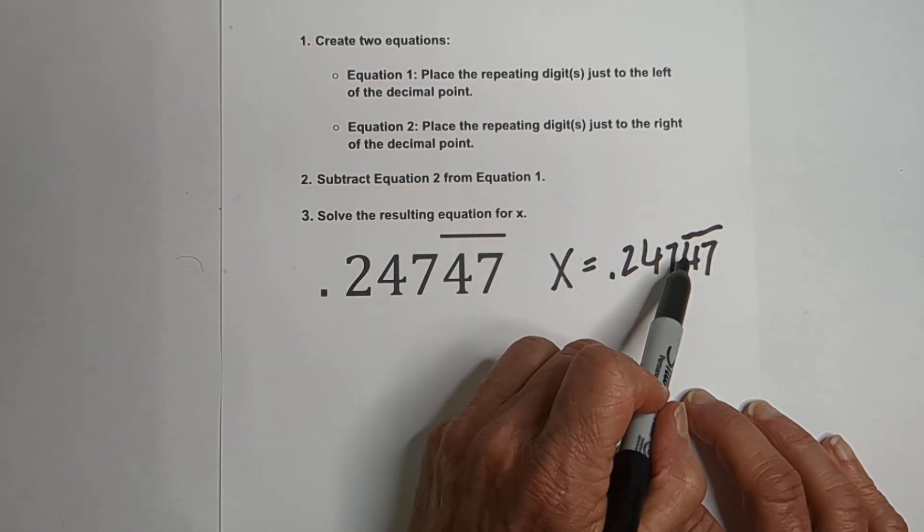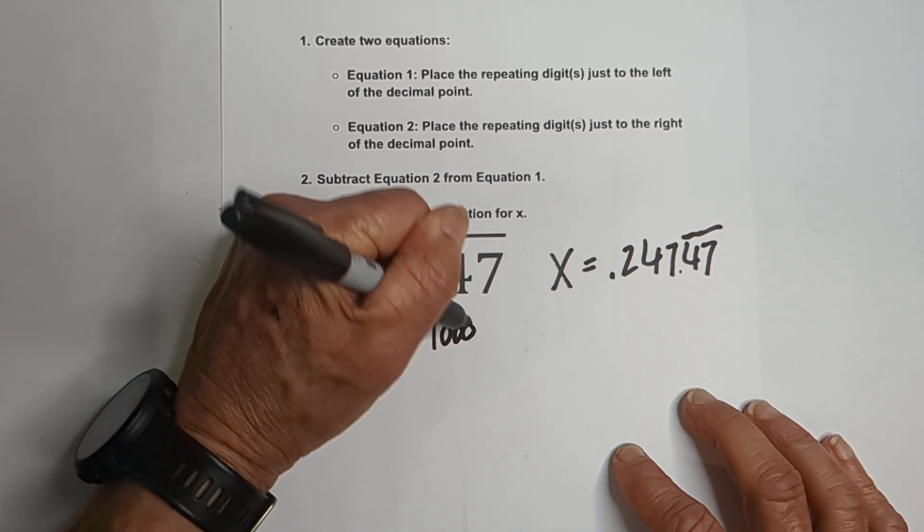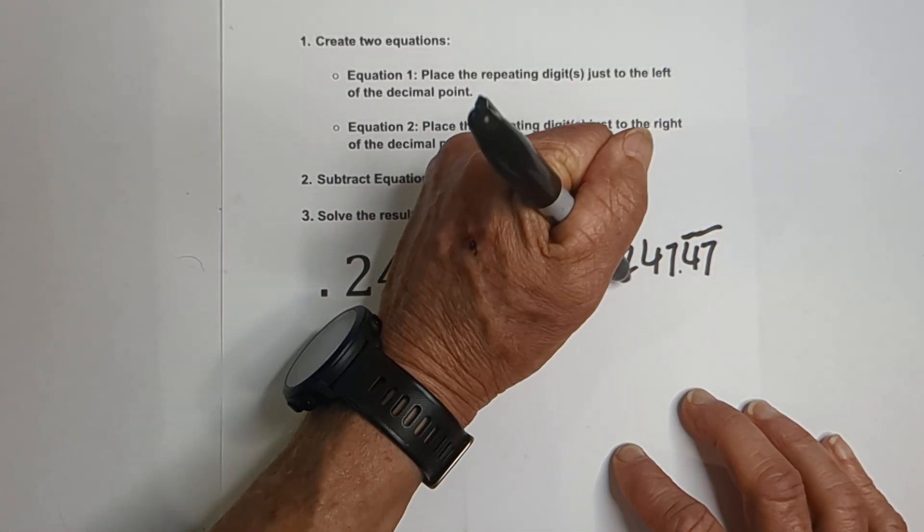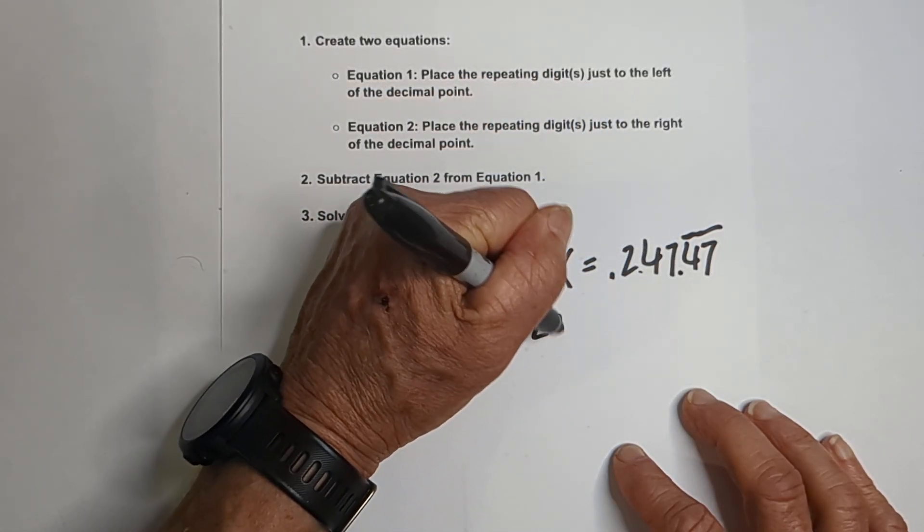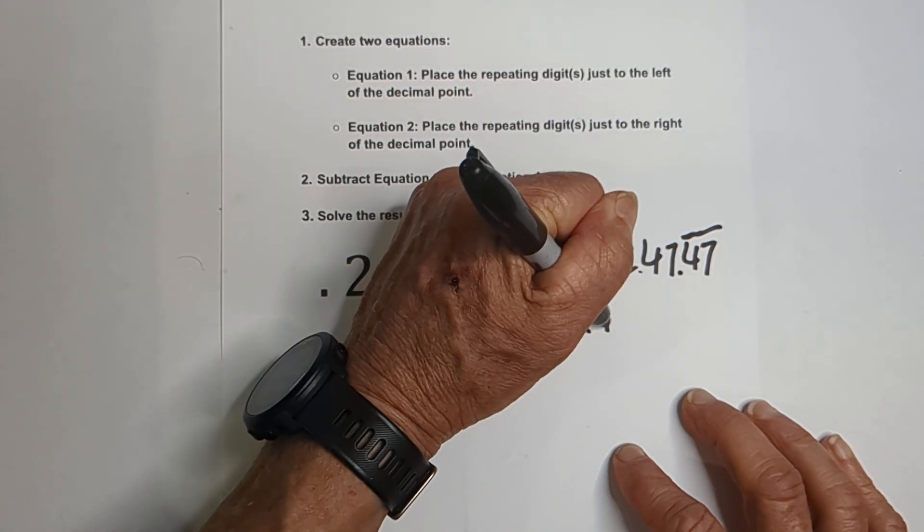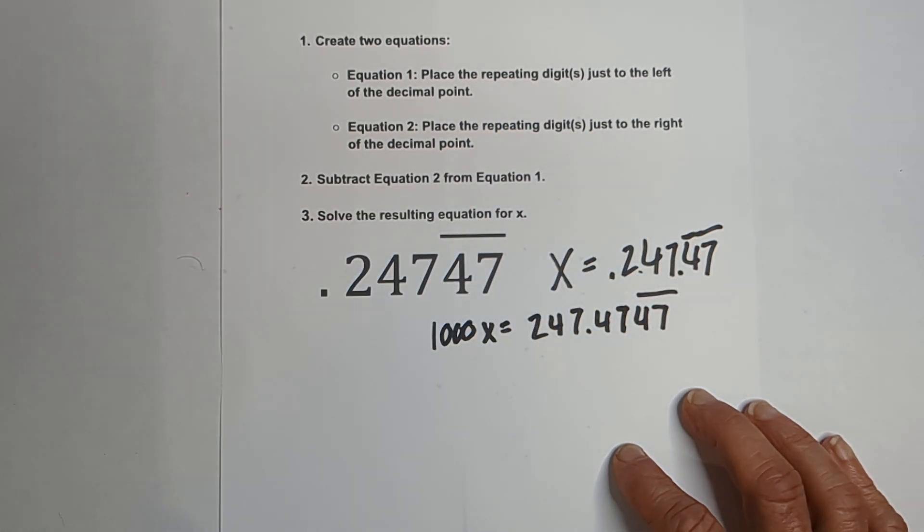And so what we do to the right, we need to do to the left. So it will be equation 1: 1,000X is equal to, we're going to move it 3 places, 1, 2, 3, 247.4747 repeating.